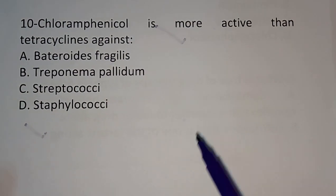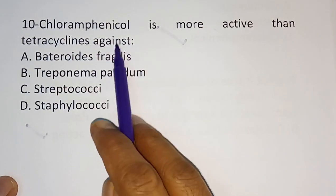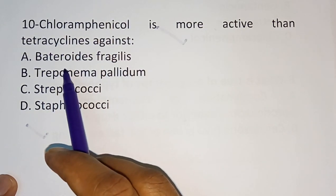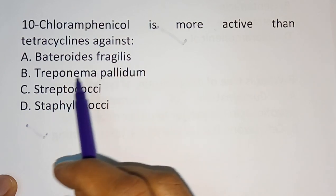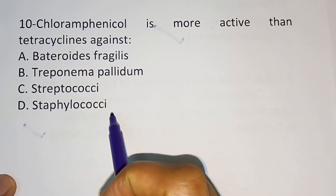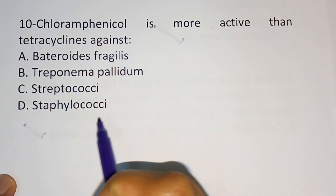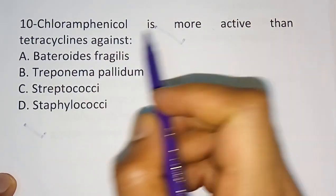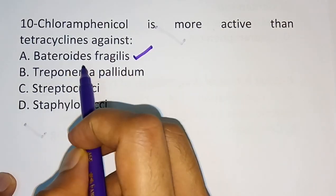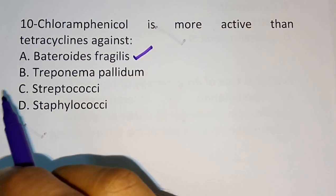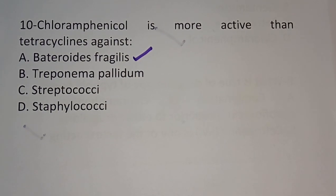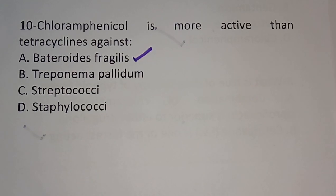Tenth question: chloramphenicol is more active than tetracycline against which organism? Option A: Bacteroides fragilis. Option B: Treponema pallidum. Option C: Streptococcus. Option D: Staphylococcus. The correct answer is option A — chloramphenicol is more active than tetracycline against Bacteroides fragilis. Thank you for watching this video. Hope you understood these questions very well.